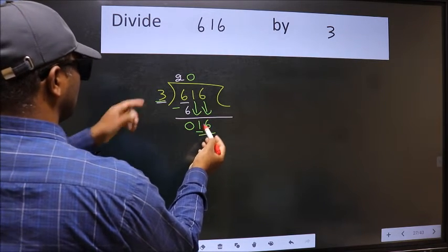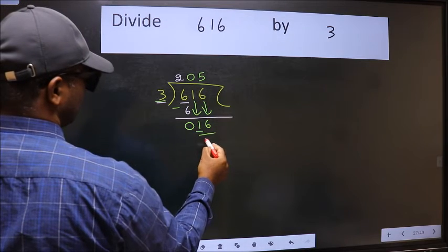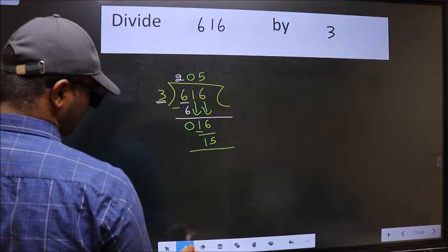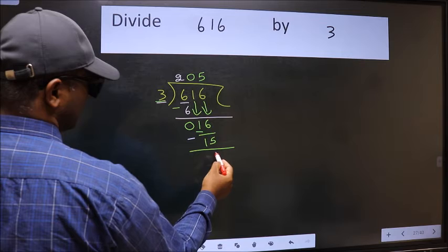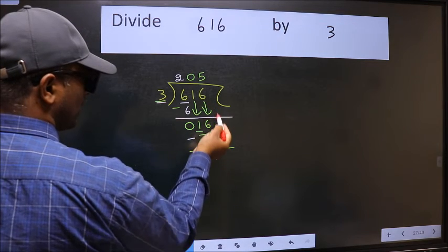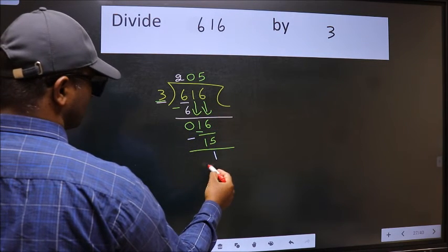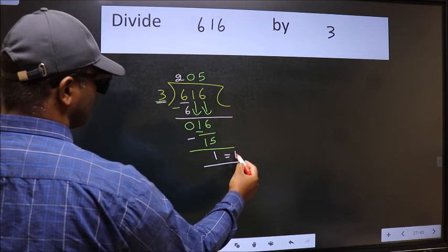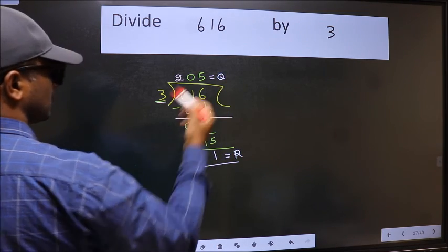A number close to 16 in the 3 table is 3 times 5, which is 15. Now we should subtract. We get 1. No more numbers to bring down, so we stop here. This is our remainder and this is our quotient.